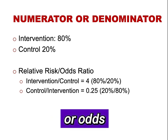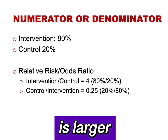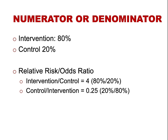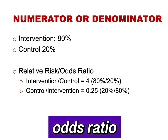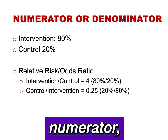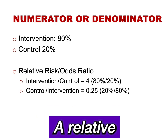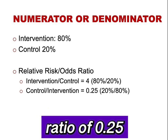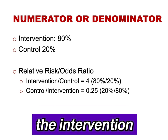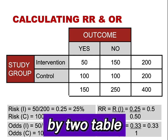In this example, the risk or odds of the intervention group, 80%, is larger than the risk in the control group. A relative risk or odds ratio of 4 indicates that the intervention is in the numerator and the control is in the denominator. A relative risk or odds ratio of 0.25 indicates that the control is in the numerator and the intervention is in the denominator.